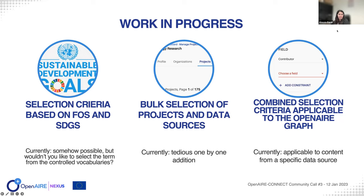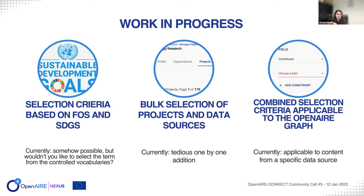And finally, the combined selection criteria — what does it mean? Basically, what is currently available only on the data source selection, which allows you to create additional filters so that you can say, for example, I want in the gateway everything that comes from HAL, which is a repository, but not really everything — only those products whose contributor is Daria. That last part, whose contributor is Daria, is only applicable to a specific data source, but we will enable this kind of filter to be applicable to everything available in the OpenAIRE Graph.